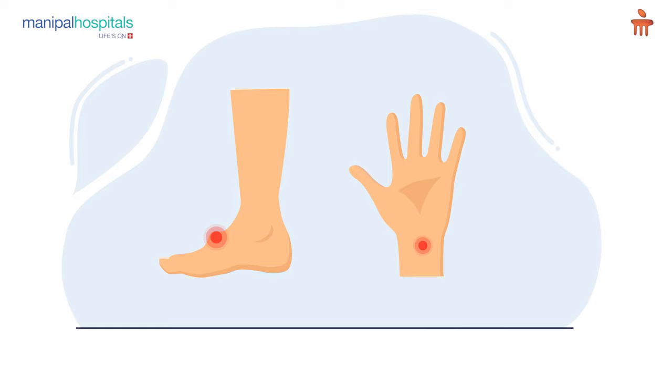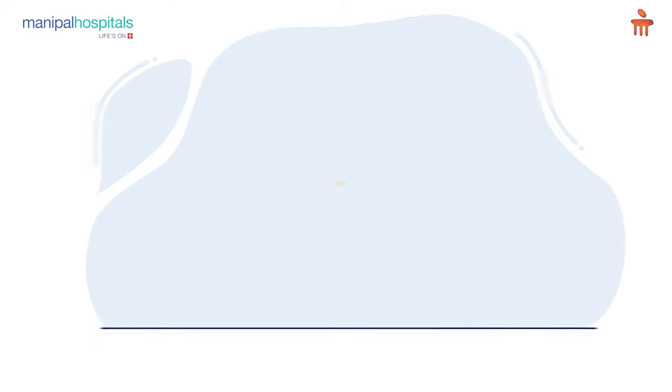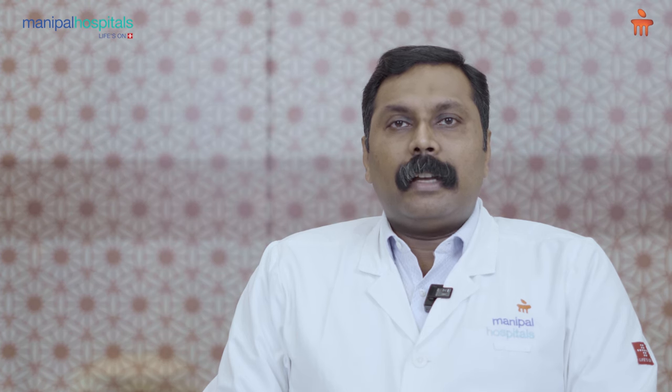Ganglion is a cystic swelling which can arise around the wrist, either on the palmar aspect or from the dorsal aspect, or it can arise from the ankle or foot.